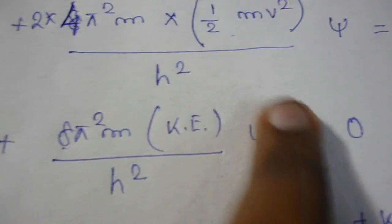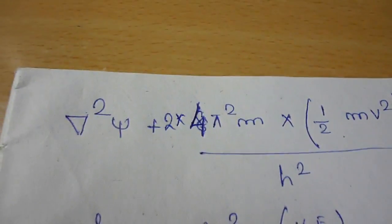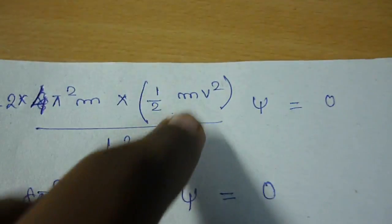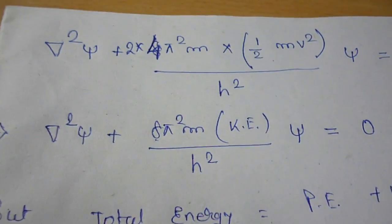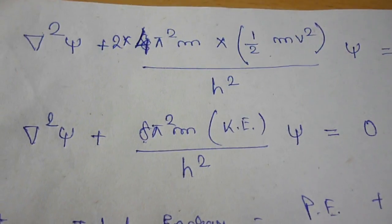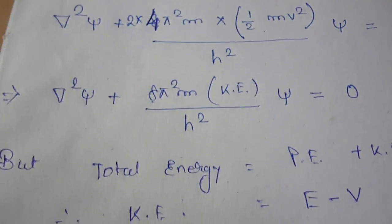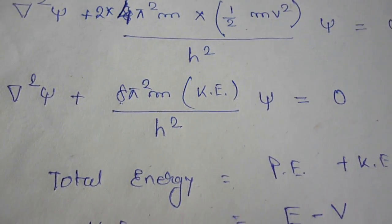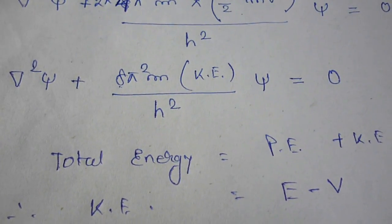So that we can get a very suitable small equation that we will use later. Now on putting all these values together and putting half mv² in this part as kinetic energy, we get this form. That is quite pretty but still not to the point. Now take the total energy condition. We know that total energy is nothing but potential energy plus kinetic energy. So we can write that kinetic energy is E minus V.